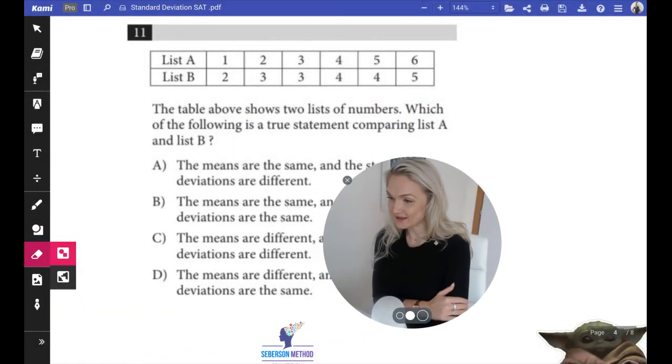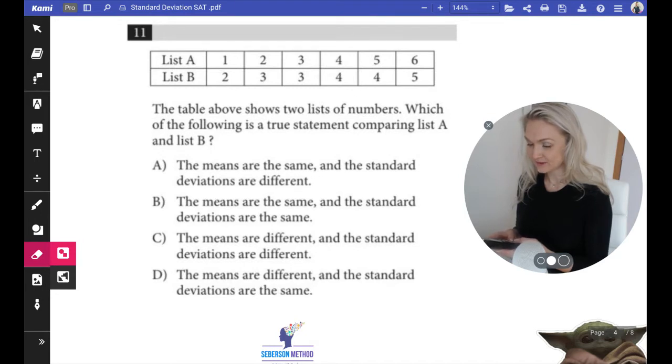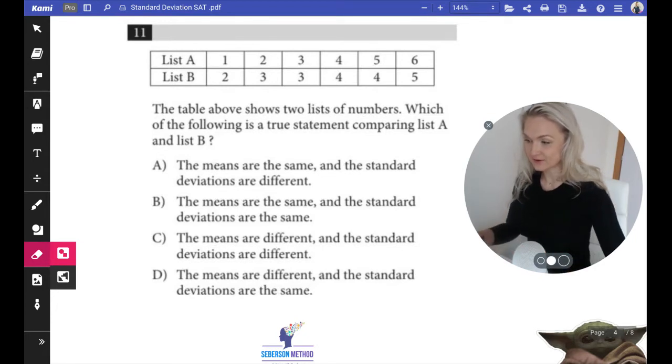Well, for list A, your mean is going to be 1 plus 2 plus 3 plus 4 plus 5 plus 6, and we're dividing it by 6. So your mean is 3.5.